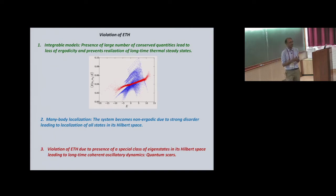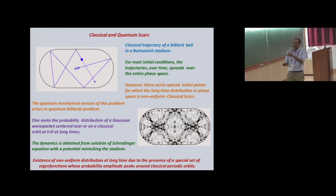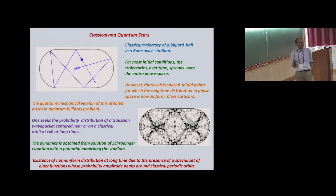Here quantum coherence is maintained over really long times, much beyond what ETH would predict. These states are the quantum scars. Scars are well known from a classical context — for example, if you take a Bunimovich Stadium and consider trajectories of a ball moving classically, for most initial conditions the trajectories fill up the entire phase space, but there are certain trajectories for which you do not fill up the space. Those are examples of classical scars.